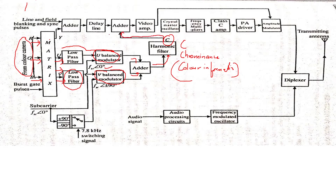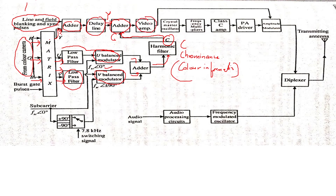The color signal C is added with the brightness signal Y, which is also generated by the matrix. The brightness signal is combined with blanking and sync pulses required for synchronization. Since the color signal takes time to generate, the Y signal is delayed accordingly. Then the delayed Y signal along with blanking and sync pulses is added with the chrominance signal C to produce the composite video signal.